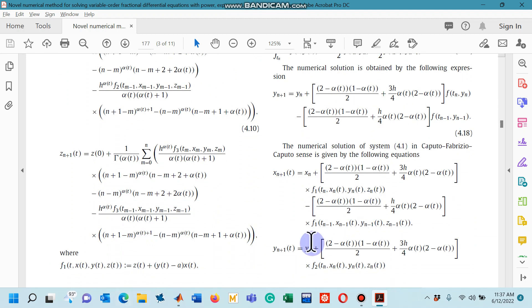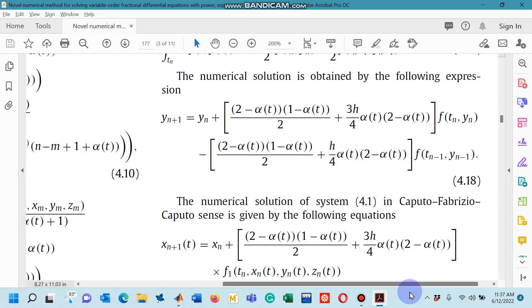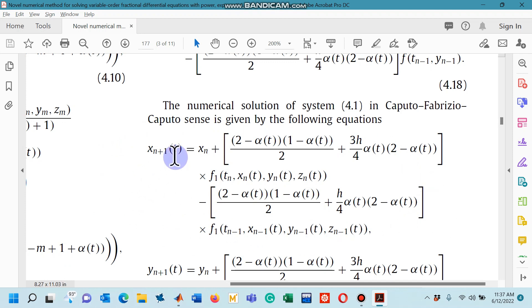Under Caputo Fabrizio fractional differential operator, the scheme is now in front of you. Let me maximize it so that you can see easily. You can see now on the screen, the first equation for x sub n plus 1 constitutes the first equation of the numerical scheme. This numerical scheme is denoted by equation 4.19 in this research paper. And it is designed for the simulation of the financial system given in this research paper by equations 4.1. If you understand how to design the code for this first equation, you will understand for the rest of two equations as well.